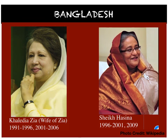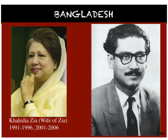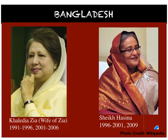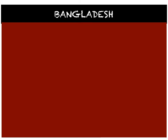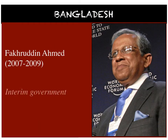Sheikh Hasina ruled from 1996 to 2001 and is the daughter of Sheikh Mujib, the first president who was assassinated by Zia Ur Rahman. Because of growing political instability, widespread corruption, and growing strife between BNP and the Awami League, emergency was imposed in 2007 and an interim caretaker government led by the military was formed. Fakruddin Ahmad was appointed as chief advisor. This clearly demonstrates the government instability in Bangladesh.